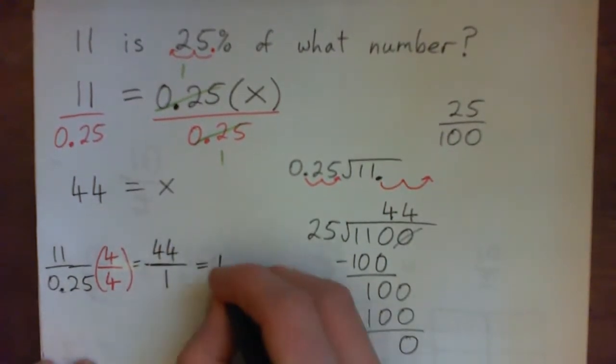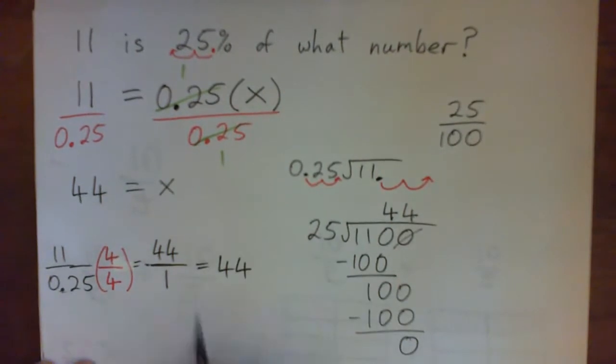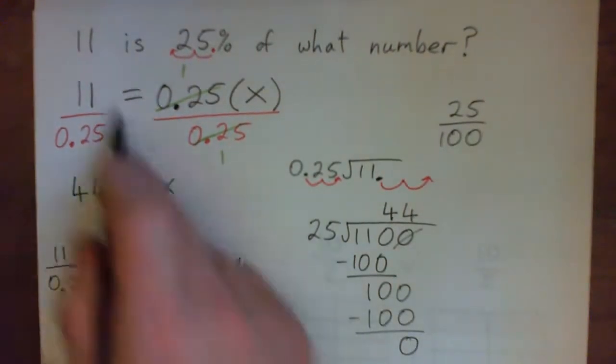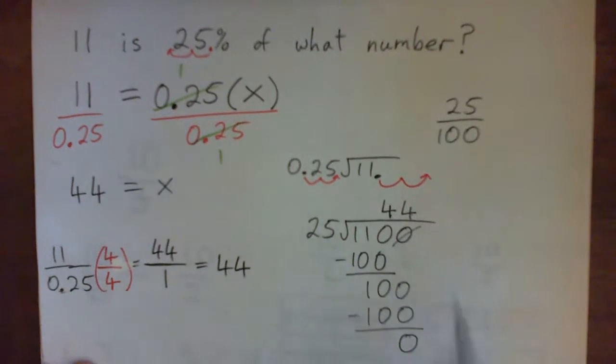So that gives 44 over 1, or 44. So I could have figured this out quicker this way. That's another way of doing it.